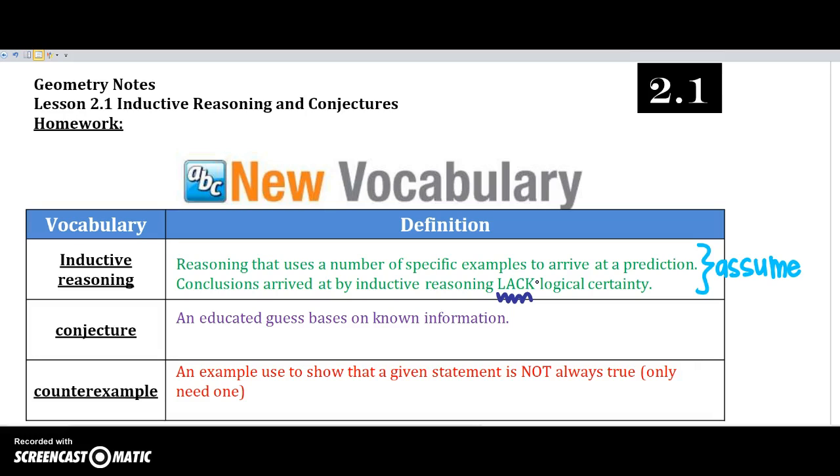So we assume that every day we can leave at 7 o'clock to be on time for school. So what if there's a wreck? What if your car breaks down? What if something goes wrong? We're using a prediction, or we're assuming things, but it might not always happen. So that's inductive reasoning.